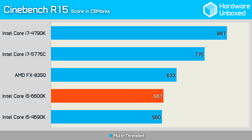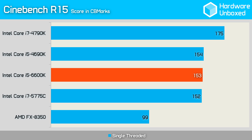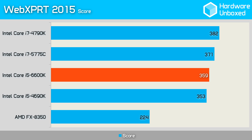First up, we tested using Cinebench. In the multi-threaded test, the 6600K managed to eke out the 4690K by just 7 points. In the single-threaded test, they went CB mark for CB mark and the 4690K got the nod by a single point in the end. Next, we looked at WebExport and the story was similar — the 6600 and 4690 were extremely close in performance, with the 6600 just winning by 6 points.